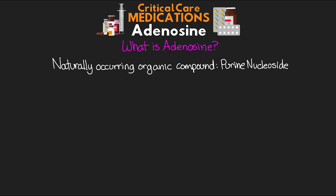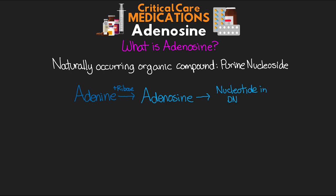Taking us back to our days of school — if you remember the structure of DNA, we had those different nitrogen bases. One of them was called adenine. If you take that adenine and add a ribose molecule to it, then you have adenosine. It's this nucleoside of adenosine that is then used to form a nucleotide found in our DNA and RNA molecules. You probably also know adenosine triphosphate — ATP — the energy molecule our cells need to carry out life. It's this nucleoside adenosine that forms ATP.